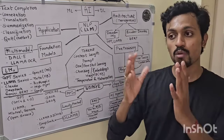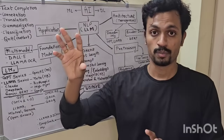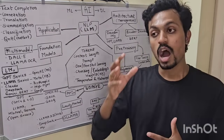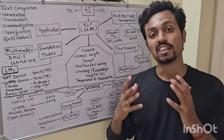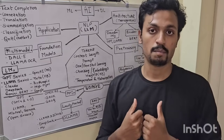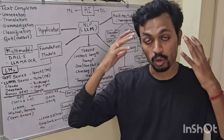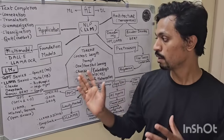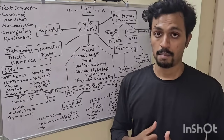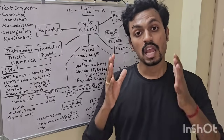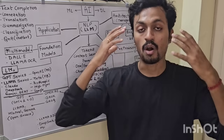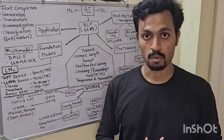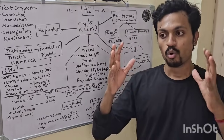Then comes weights. In a neural network, there are nodes connected by weights. A model's capacity depends on its number of weights, which are called parameters. For example, a 7 billion parameter model versus an 80 billion parameter model — the 80 billion one is roughly 10 times bigger, and correspondingly more efficient and accurate. So weights determine model size and thinking capacity.